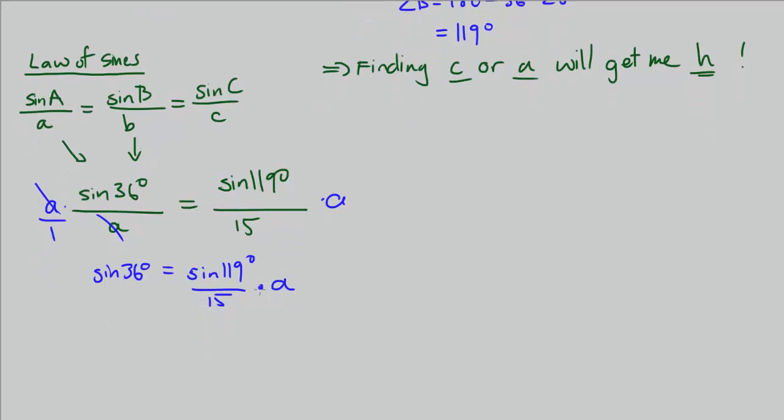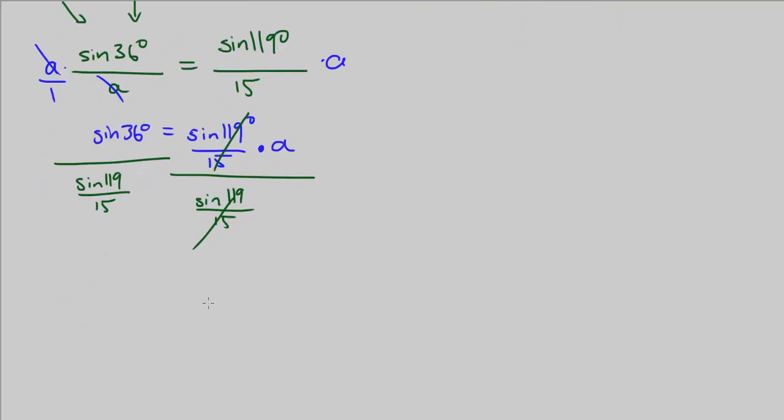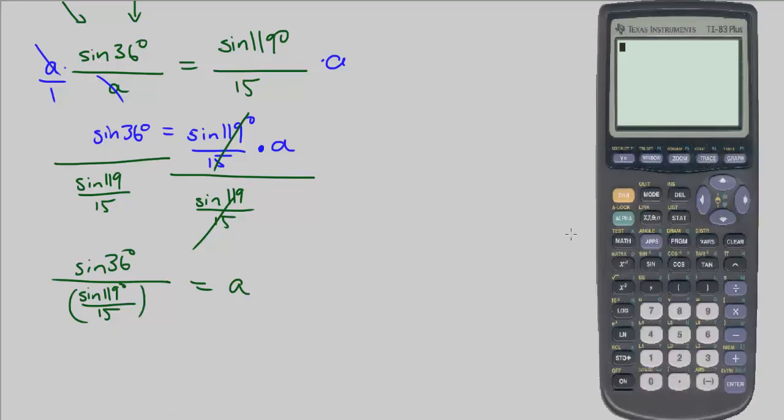To get a alone, I'm multiplying by a now. Let me divide both sides by sine of 119 over 15. These cancel out and I'm left with a equals sine of 36 degrees divided by the fraction sine of 119 divided by 15, so this is a little fraction in the denominator. I can plug that in my calculator.